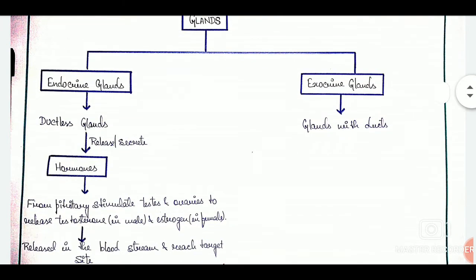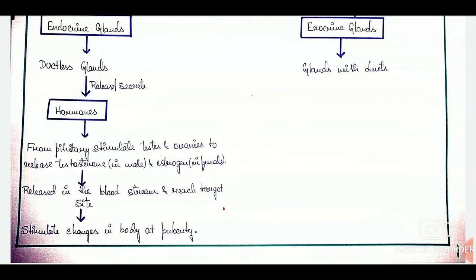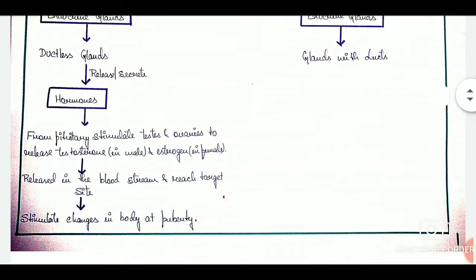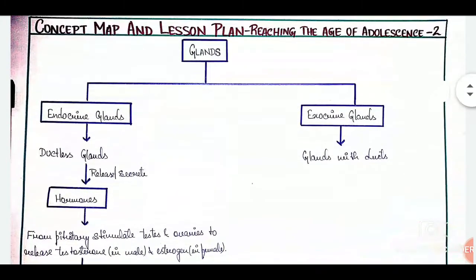Then, we have two types of glands, endocrine and exocrine. So again, we have put them in boxes. That is the most important thing about concept maps. We have to put the important terms in boxes or we can also encircle them. So this was our concept map.